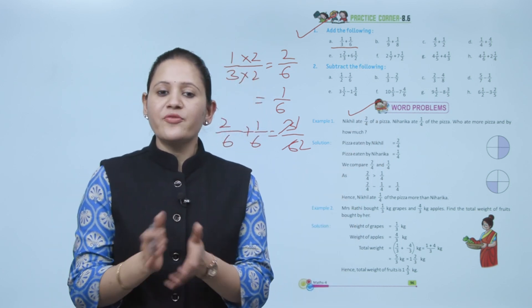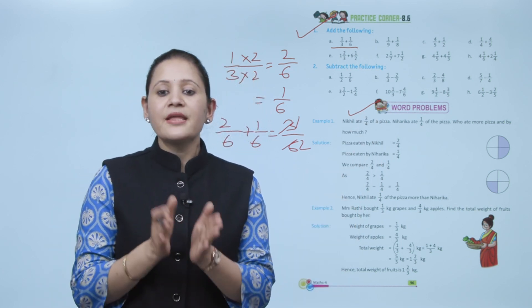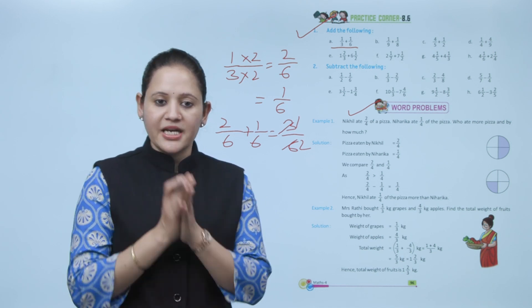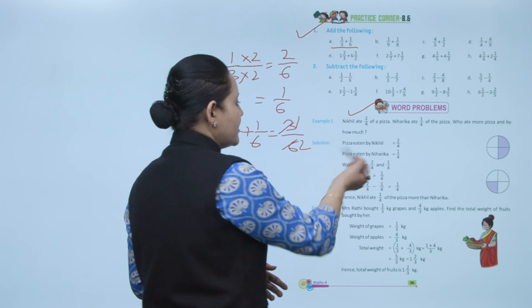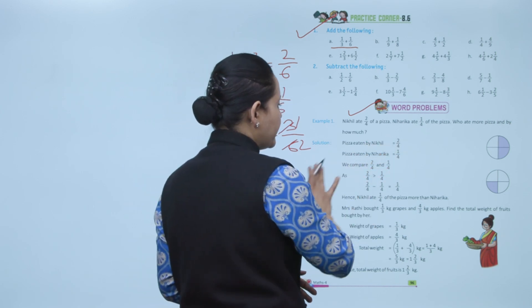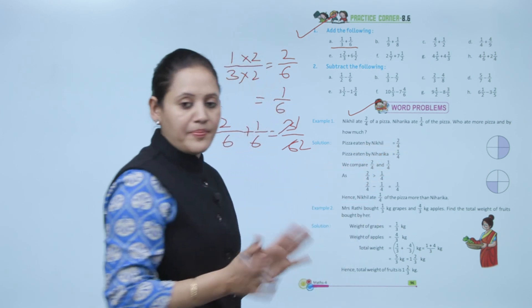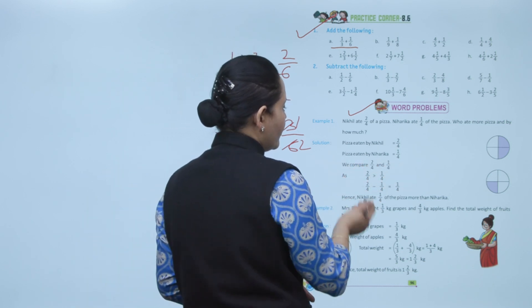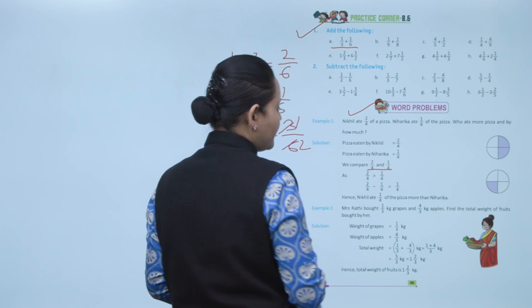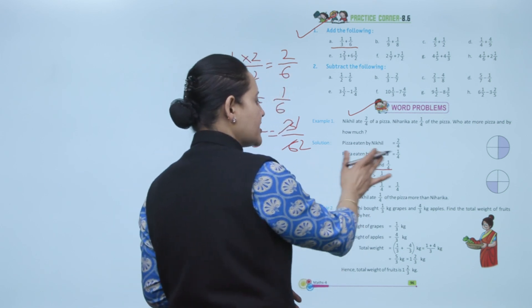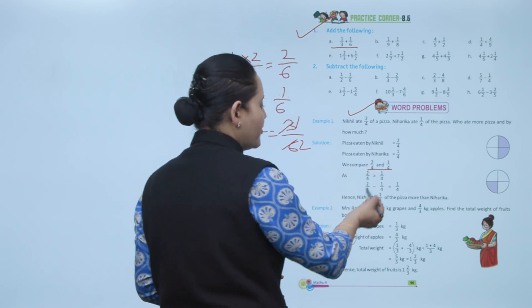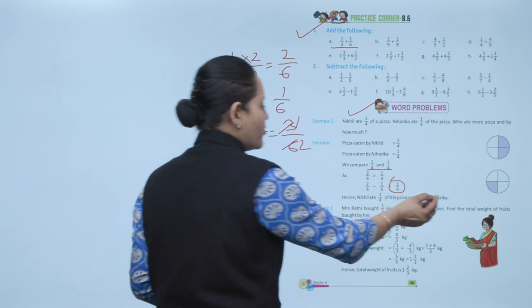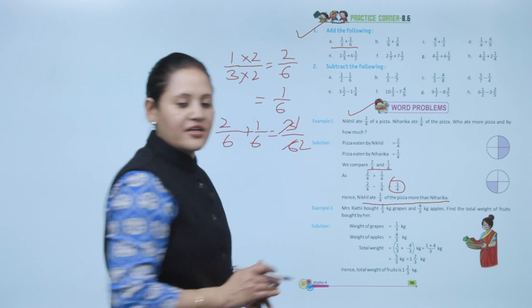Word problem: Nickel ate 2 by 4 of pizza and Niharika ate 1 by 4 of pizza. Who ate more and by how much? Both are like fractions. Since 2 by 4 is greater than 1 by 4, Nickel ate more. Subtract: 2 by 4 minus 1 by 4 equals 1 by 4. So Nickel ate 1 by 4 of the pizza more than Niharika.